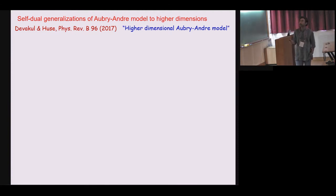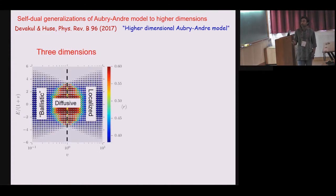So very recently due to interest in many body localization, this kind of model has been extended to higher dimensions. For example this work by David Hughes and Tridev Devakul, they generalized to quasi periodic models to higher dimension. The speciality of these models are that they kept this self duality which is there in the 1D Aubry-Andre model. In three dimension in particular they did some exact diagonalization of this model on large systems and they found out from various diagnostic a kind of a phase diagram for localization and delocalization.